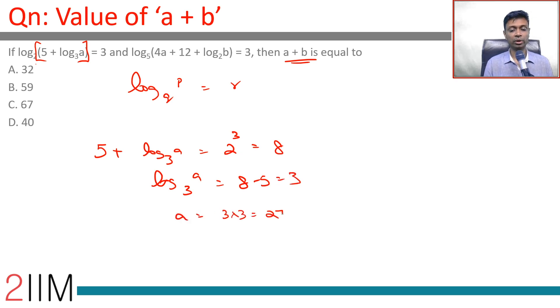Likewise for this part, log something to the base 5 is 3, or that something 4a plus 12 plus log b to the base 2 is 5 cube which is 125.